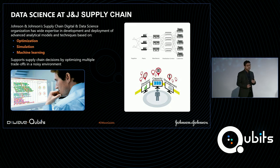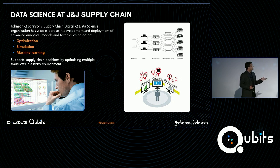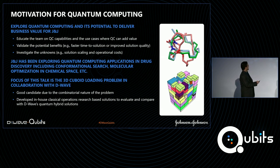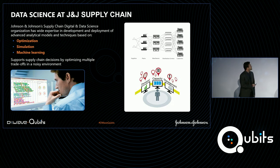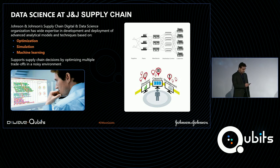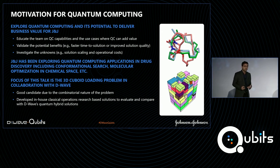We develop solution methods to solve complex decision problems in the supply chain space, where typically you have many conflicting objectives, tradeoffs, and uncertainties. These examples include applications in production scheduling, multi-echelon inventory optimization, strategic capacity planning, and load planning problems. Back in 2021, we started a collaboration with D-Wave to explore the use of quantum computing methods to solve business optimization problems.